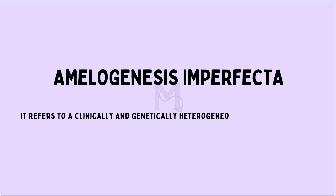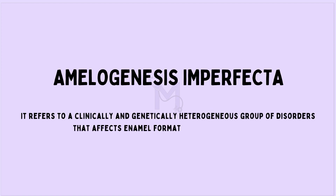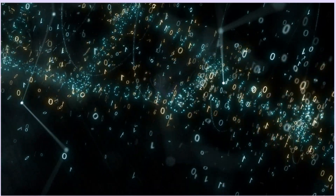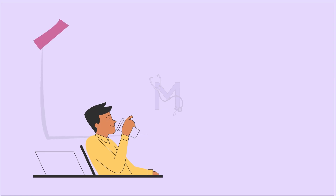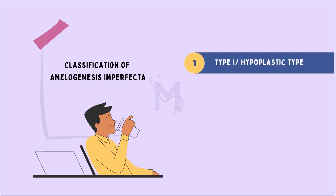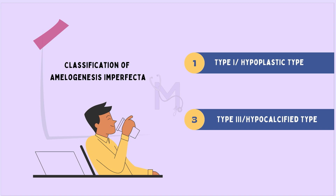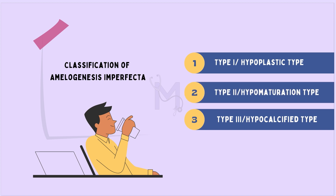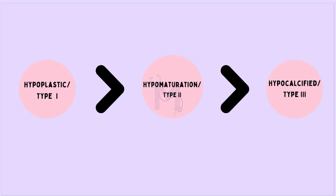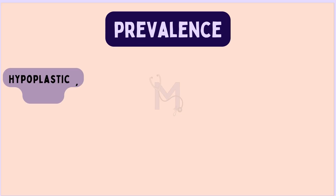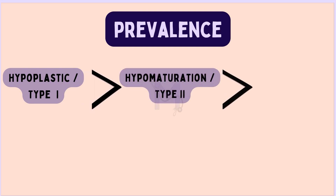Amelogenesis imperfecta refers to a clinically and genetically heterogeneous group of disorders that affects enamel formation in both dentitions. A complex inheritance pattern gives rise to structural defects in the enamel. Based on the stage of enamel formation that is affected and the clinical presentations, it is broadly classified as hyperplastic or type 1, hypercalcified or type 3, and hypomaturation or type 2. Several subtypes are also recognized, with the prevalence pattern being hyperplastic, followed by hypomaturation, followed by hypocalcified.